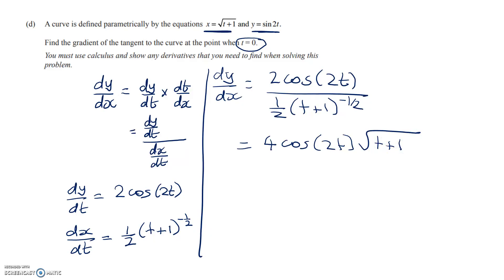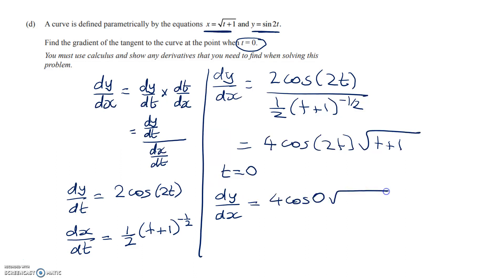The last thing I've got to do is to substitute in t equals 0. So dy by dx is equal to 4 cos 0 times the square root of 0 plus 1. Cos of 0 is 1, this is 1, so the answer is simply 4. And that's the end of that question.